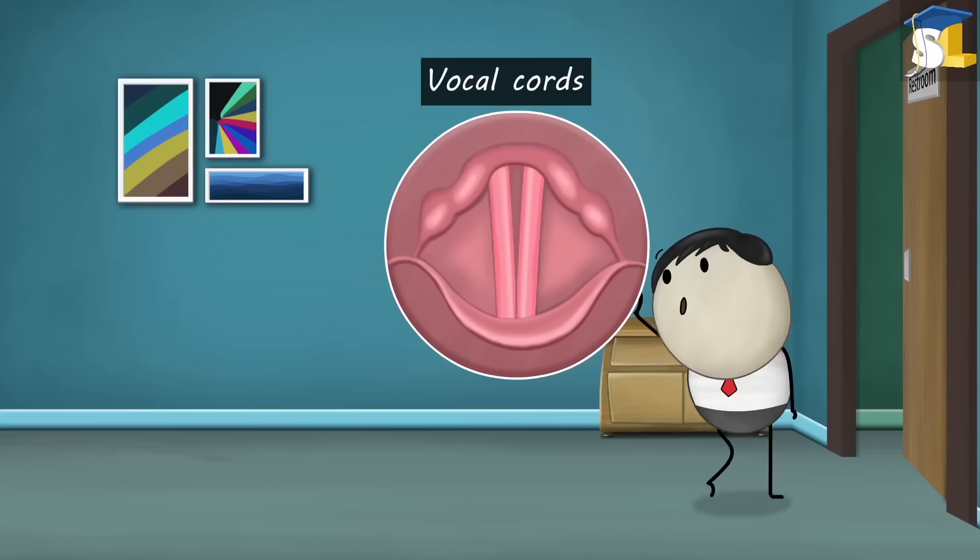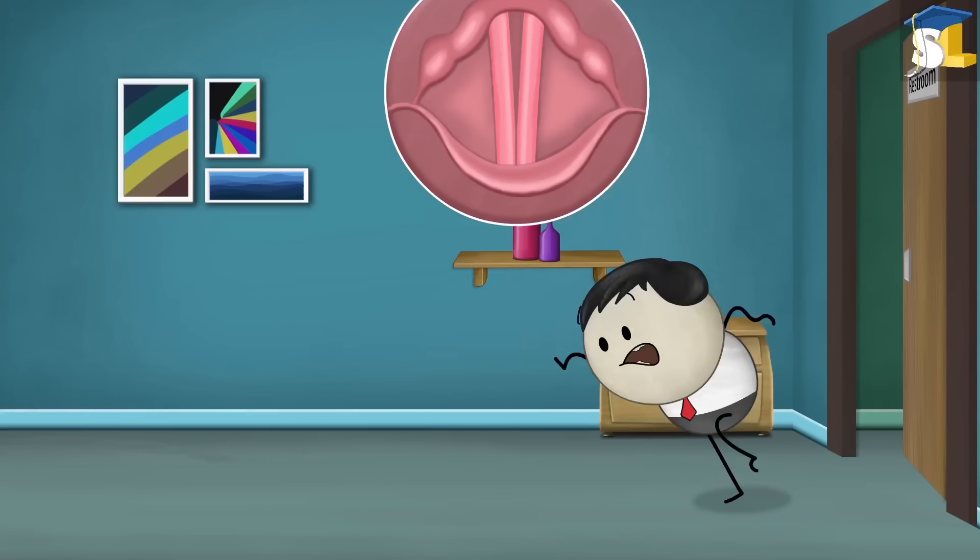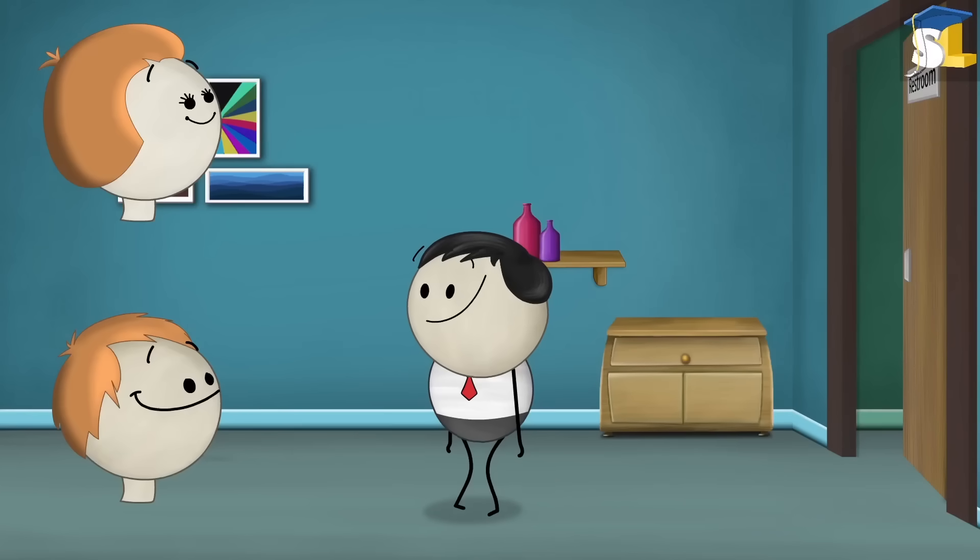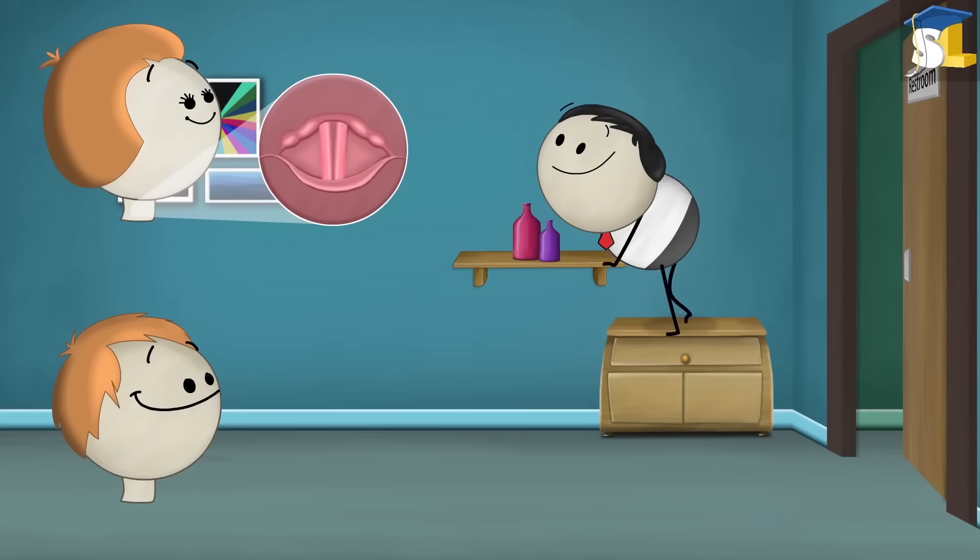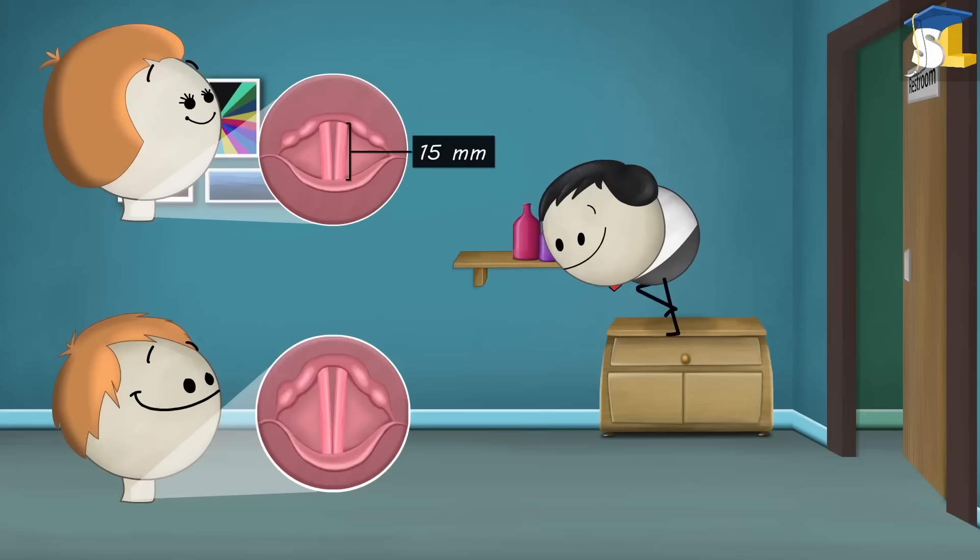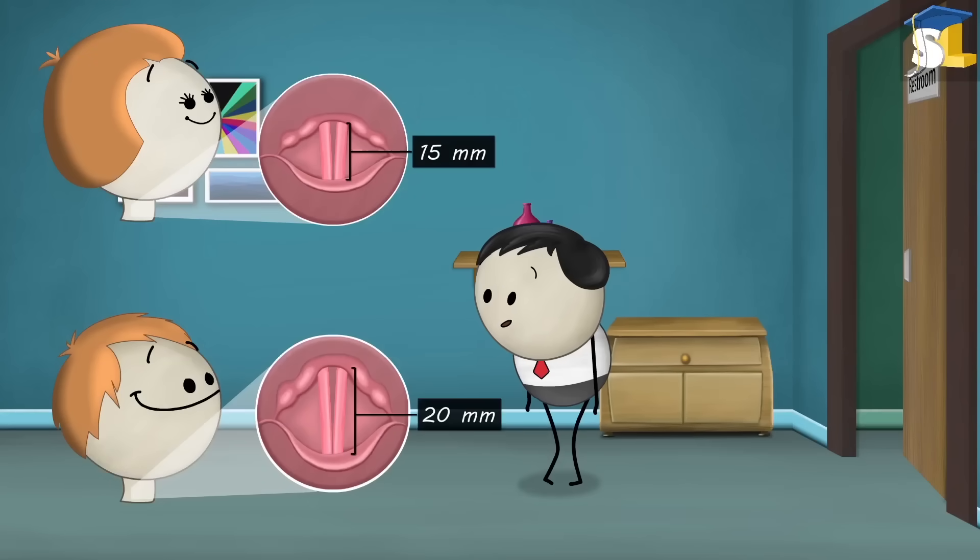In humans, sound is produced with the help of vocal cords. However, the length of vocal cords of women and men are different. A woman's vocal cords are about 15 mm long while a man's vocal cords are about 20 mm long.